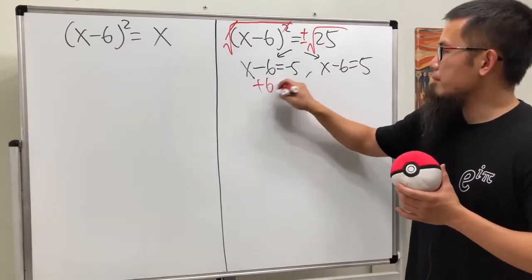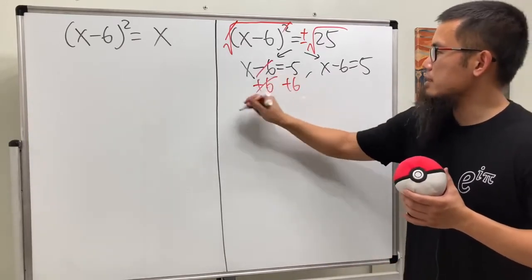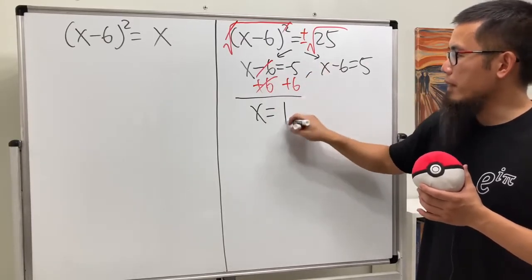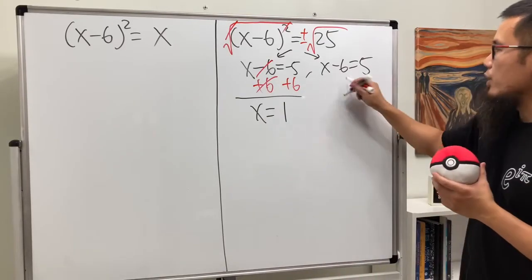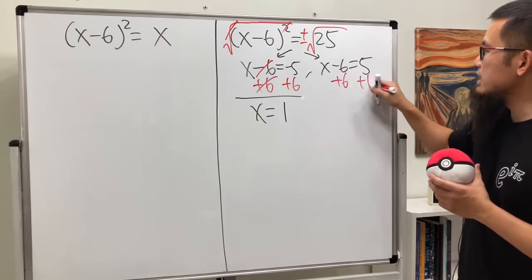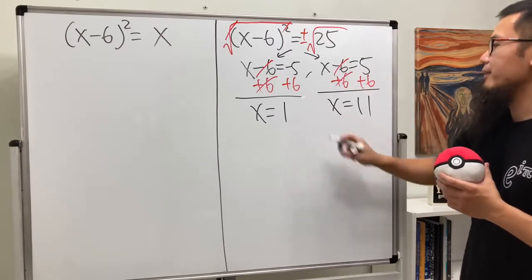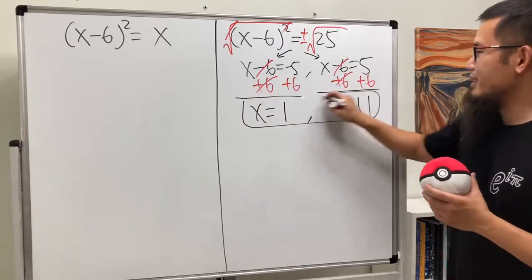From here, go ahead and add a 6 on both sides. So, we get x is equal to negative 5 plus 6, which is 1. And, for the second equation, we just add a 6 on both sides. Cancel this out, and we get x is equal to 11. All right, so that's it. Pretty straightforward.